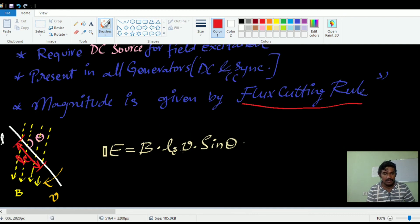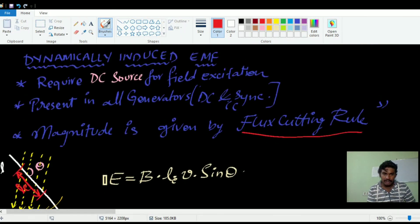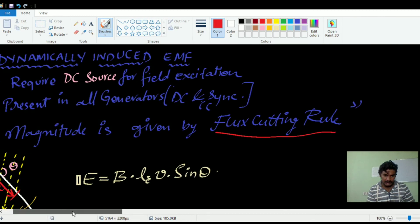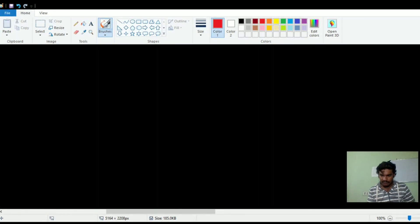V is the peripheral velocity of that conductor. Sine theta is the sine of the flux cutting angle. So according to flux cutting rule, this is the magnitude of dynamically induced EMF. Now let us see the statically induced EMF case.